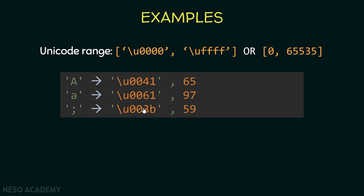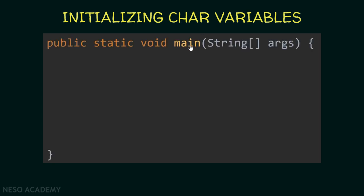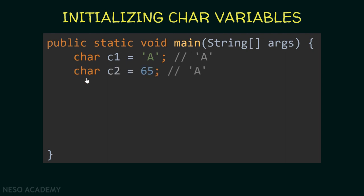The semicolon has its own Unicode representation and is the integer 59. Now let's see how to use all of this inside Java. Inside our main function, we'll initialize some character variables. We use the char keyword and name the variable c1, assigning it the capital letter A inside single quotes — so c1 will be the character A. Then c2 is initialized to 65, and Java will use the Unicode encoding scheme to convert this number to the correct character, which is also A.